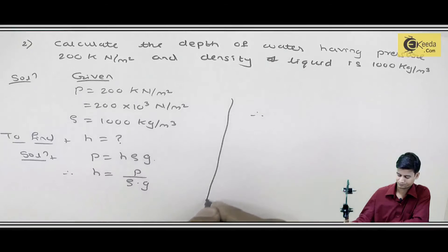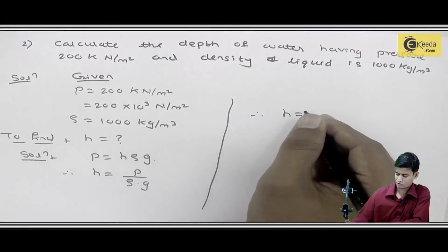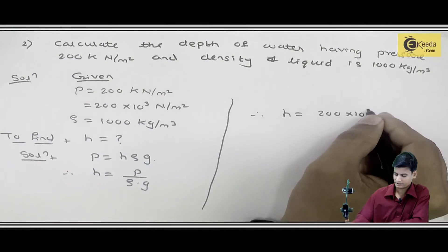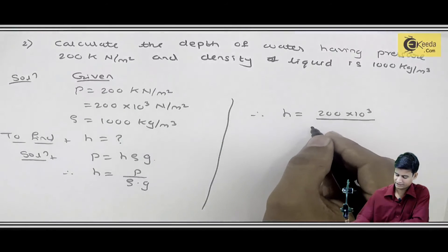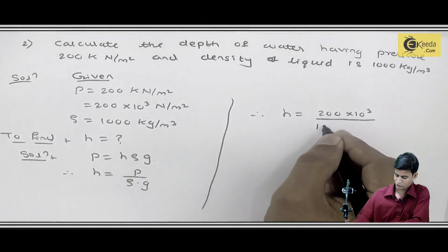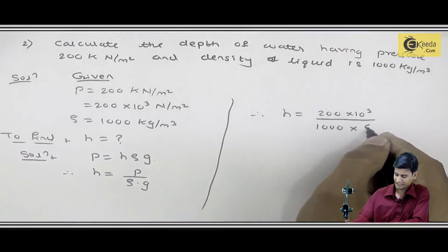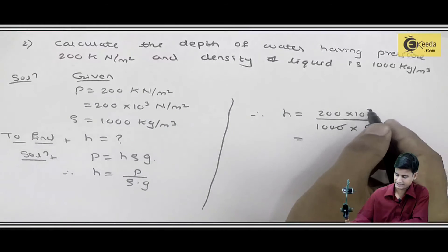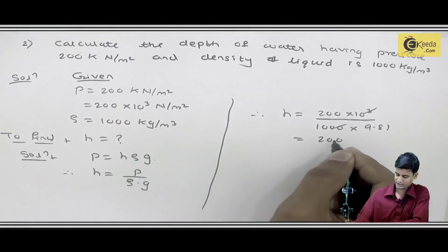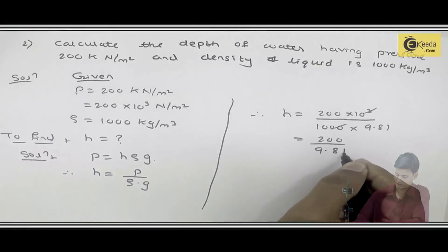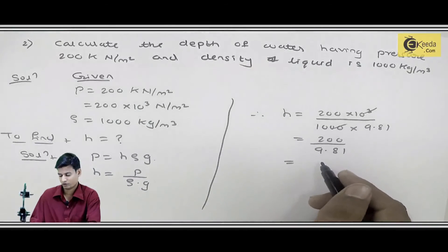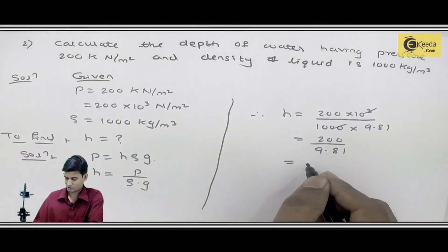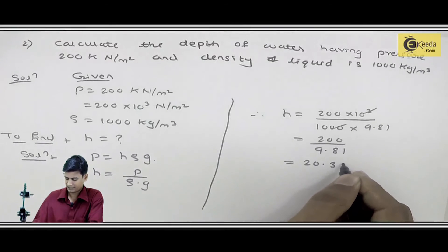Substituting the values: h = (200×10³)/(1000×9.81). The 1000s cancel out, giving h = 20.38 meters.